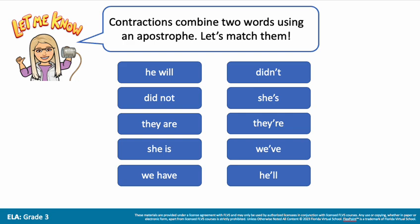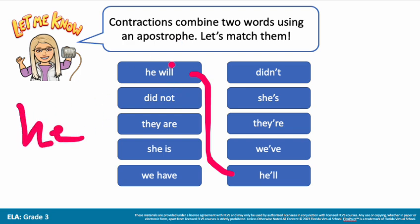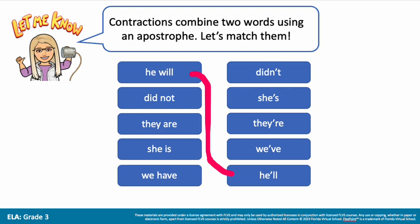Let's see if we can match a couple of those words. My first one is 'he will.' So if I have 'he will,' that'll be 'he'll' down below. I'm essentially taking 'he,' taking the last two letters of 'will,' and putting my apostrophe in the middle to make a brand new word. So I have 'he'll.' Let's look at another.